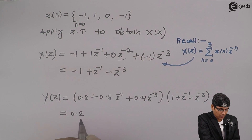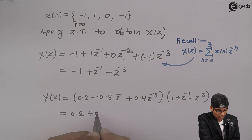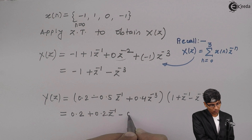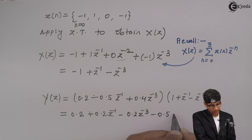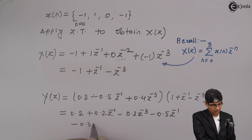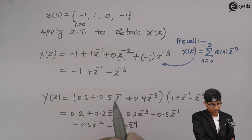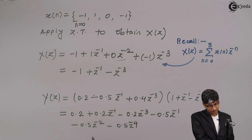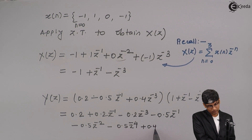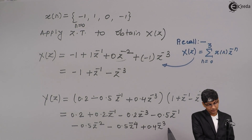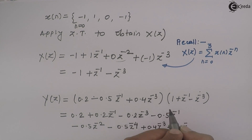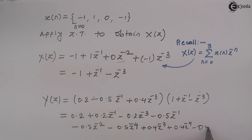Multiplying term by term: with -1 we get -0.2; with z⁻¹ we get +0.2z⁻¹; with -z⁻³ we get -0.2z⁻³. Then -0.5z⁻¹, -0.5z⁻², and -0.5z⁻⁴ (since -1 + -3 = -4). Then multiplying by 0.4: +0.4z⁻³, +0.4z⁻⁴, and -0.4z⁻⁶.